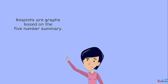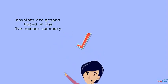Box plots are graphs based on the five-number summary. Here are some general pictures. A box plot can be horizontal and look like this, or it can be vertical and look like this.